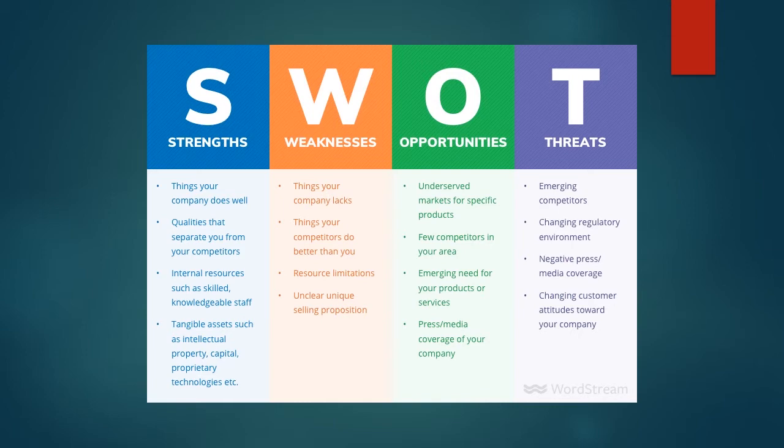Now let's look at weakness. Things your company lacks — what are your drawbacks? Things your competitors do better than your company. Your resource limitations. Unclear unique selling proposition means you don't know how to market your product, how to sell your product, or what will be that unique selling point — you are lacking. Those are all the weaknesses.